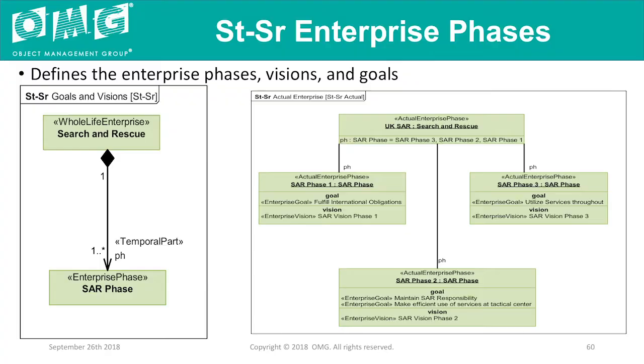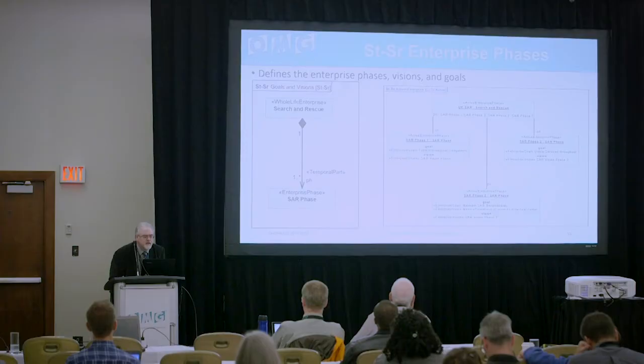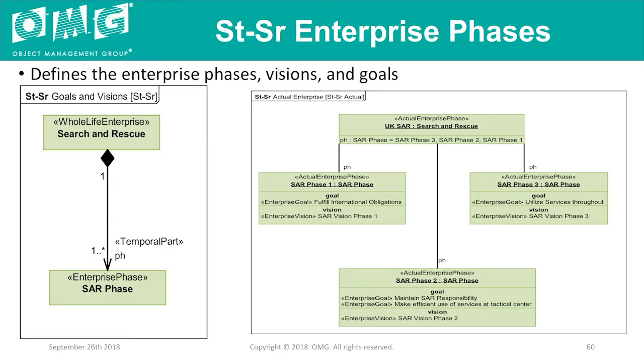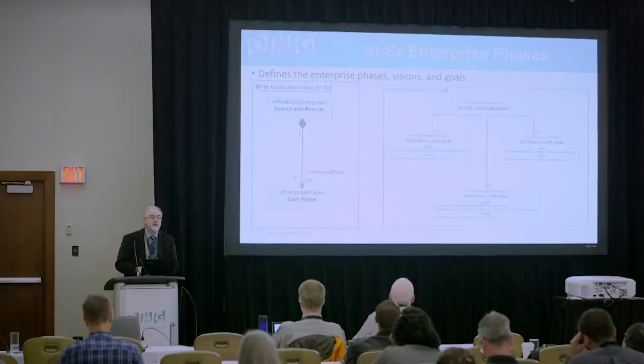People ask: why do I need UAF? It's just complicated with all these extra views. Well, you don't need to use all the views — you use the ones correct for you. If you're trying to define a search and rescue operation made up of temporal phases, I can say I have phase one fulfilling international obligations, phase two maintaining responsibilities while making them more efficient, and phase three providing services throughout. I can spell out with time when each phase will happen, and also specify what capabilities will be deployed. You're able to define capability taxonomies as well as dependencies.